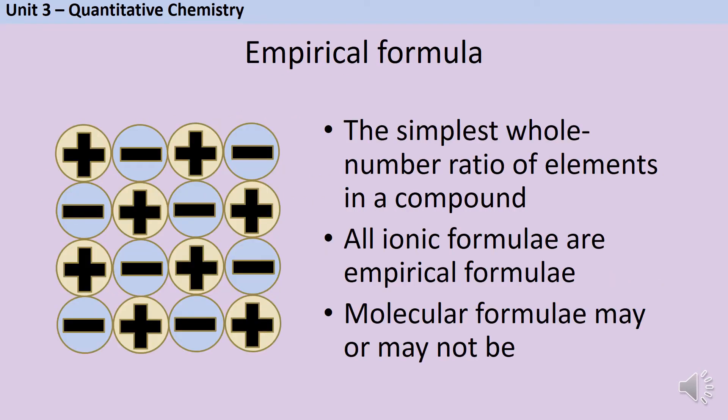An empirical formula is the simplest whole number ratio of elements in a compound. If you're doing some analytical chemistry to identify an unknown substance then many techniques will tell you the empirical formula. They tell you that your substance contains twice as much carbon as nitrogen but not exactly how many atoms there are in each molecule.